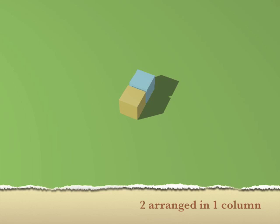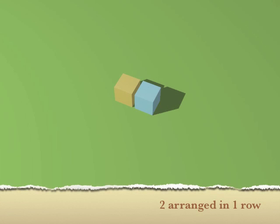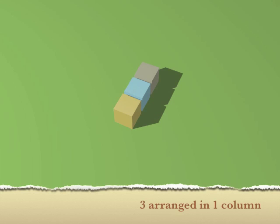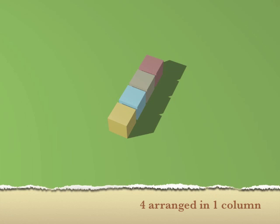Here we have the number two, simply arranged as two blocks side by side forming one column. We can turn those two blocks around and show them as a row, but that's the only two arrangements for the number two. Looking at the number three, we can form one column of three blocks or one row of three blocks, but those are the only two arrangements.